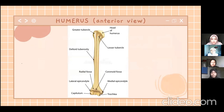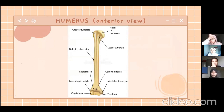Firstly, the humerus. The humerus connects the scapula and the two bones of the lower arm, which are the radius and ulnar. The humerus can be viewed from the anterior and the posterior. In the anterior view, we can see two indentations, which are the coronoid fossa and the radial fossa at the distal end of the humerus.